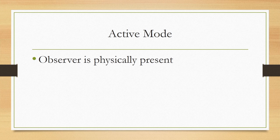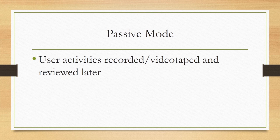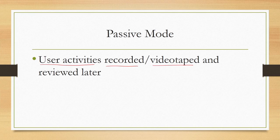In the active mode, the observer is physically present in the work setting where the users are being observed. The observer captures observations in some form — either handwritten notes, videography, or whichever method is comfortable. In passive mode, the observer is not physically present; instead, user activities are recorded or videotaped and the observer reviews those videos or recordings at a later time.